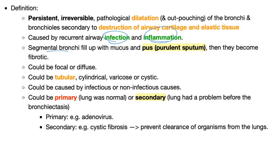The segmental bronchi fill up with mucus and pus — purulent sputum — then become fibrotic. It could be focal in just one place or diffuse. Focal bronchiectasis can be removed surgically, but if it's diffuse, involving the entire lung or both lungs, surgery is not an option.